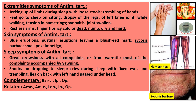Extremity symptoms of Antim Tart: jerking of limbs during sleep with loose stools, trembling of hands, feet go to sleep on sitting, dropsy of legs, dropsy of the left knee joint while walking, tension in hamstrings, synovitis, joint swollen, restless arms, fingertips icy cold, dead, numb, dry, hard. The hamstring muscles — biceps femoris, semitendinosus, and semimembranosus — lie behind the thigh bone and work for hip joint and thigh movement.